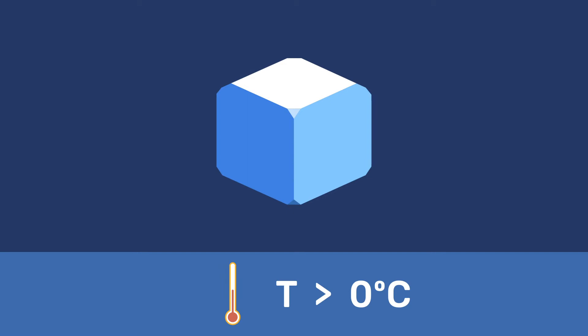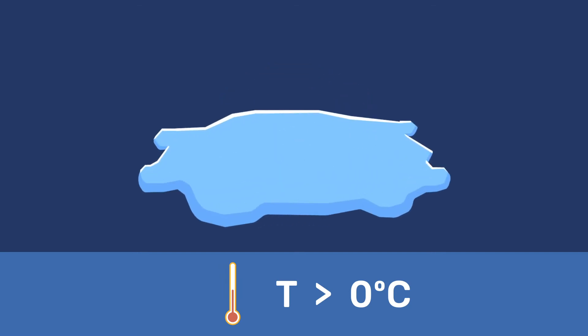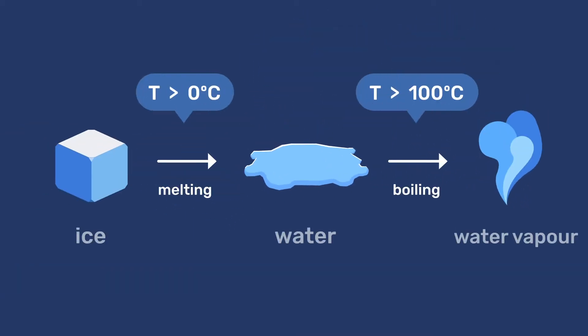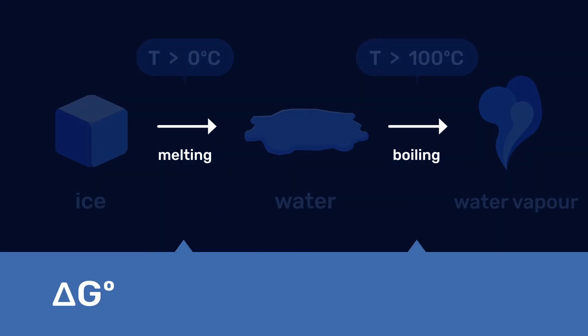Above 0 degrees Celsius, ice melts, and above 100 degrees C, water boils. Both processes are spontaneous in those temperature ranges. Their ΔG's are negative.